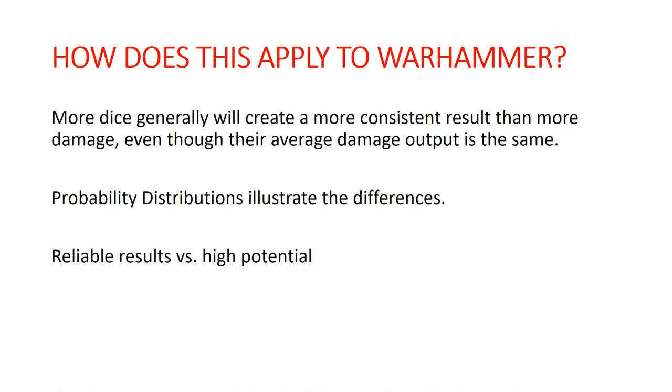So how does this really apply to Warhammer? It's really important to note here that, although mathematically in terms of getting to an average, having a damage characteristic of 3 is the same as having an attack characteristic of 3. A damage characteristic of 3 with 1 attack or an attacks characteristic of 3 with a damage characteristic of 1, those come out to the same average if you have the same hit and wound profile. However, your actual results are going to be dramatically different.